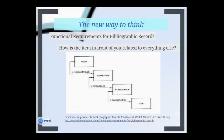Enter FRBR and a new way to think about our collections. The big boxes of Work, Expression, Manifestation, Item are still focused on the thing. But FRBR and RDA are really focused on the relationships — how is the item in front of you related to everything else? The Work is realized through the Expression. The Expression is embodied in the Manifestation. The Manifestation is exemplified by the Item. Those relationships are really where the change in philosophy comes in when recording data in RDA.